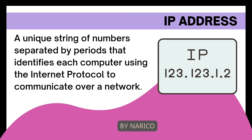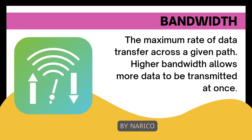IP Address: a unique string of numbers separated by periods that identifies each computer using the internet protocol to communicate over a network. Bandwidth: the maximum rate of data transfer across a given path. Higher bandwidth allows more data to be transmitted at once.